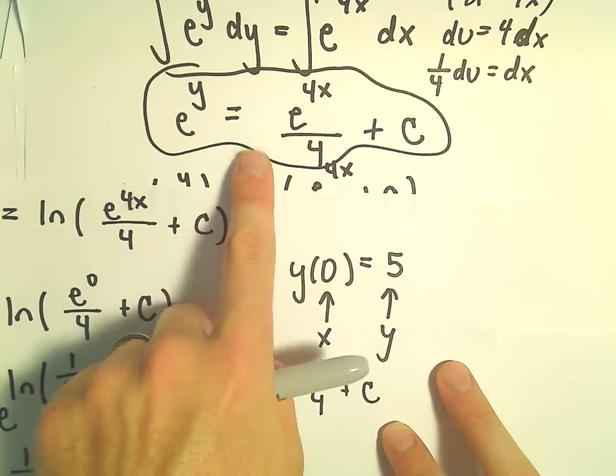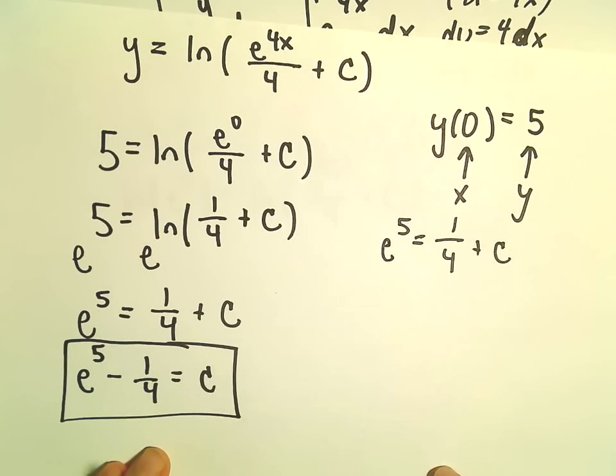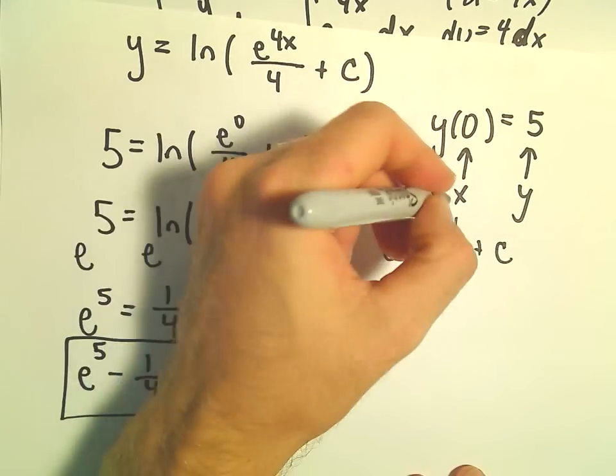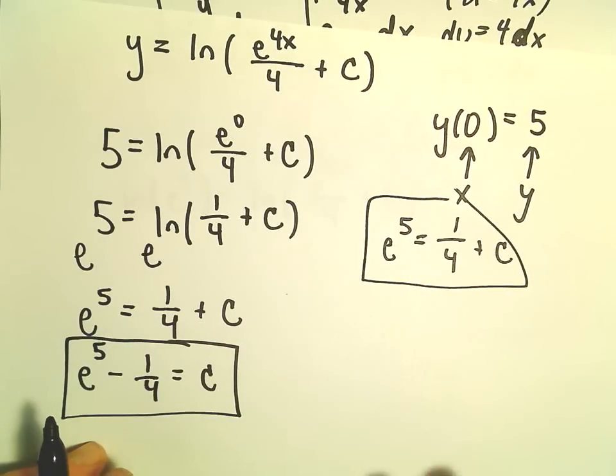If we plugged in the initial condition immediately, we would end up getting the exact same thing after we solve for C. Either way is perfectly okay. Before we took the natural logarithm, we could have saved a step, but either way works.